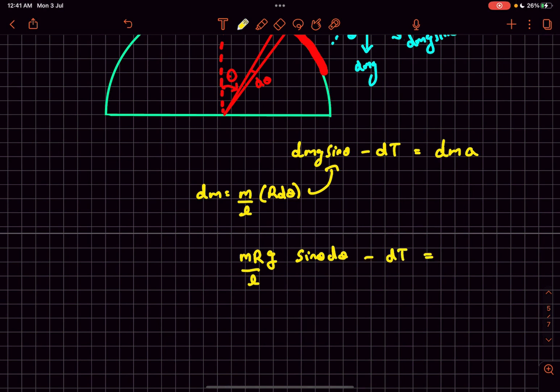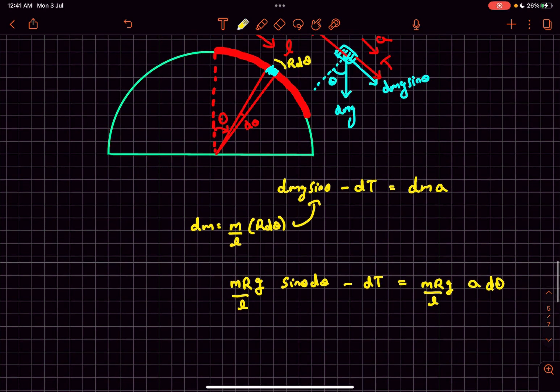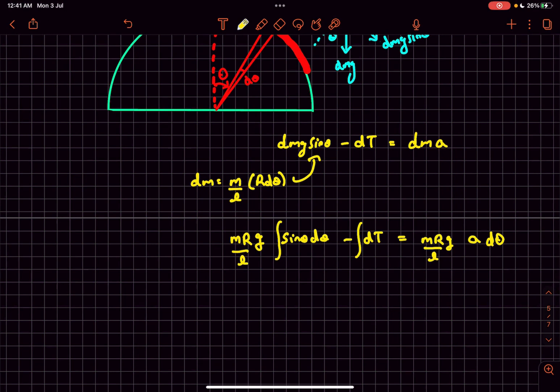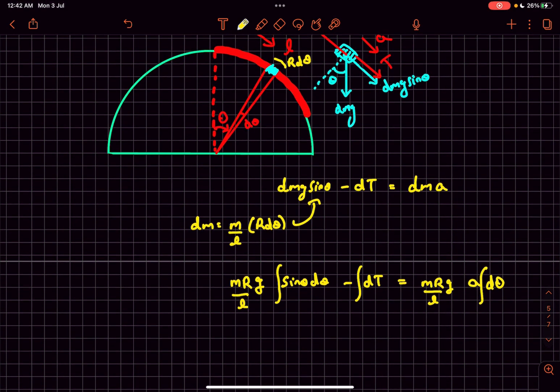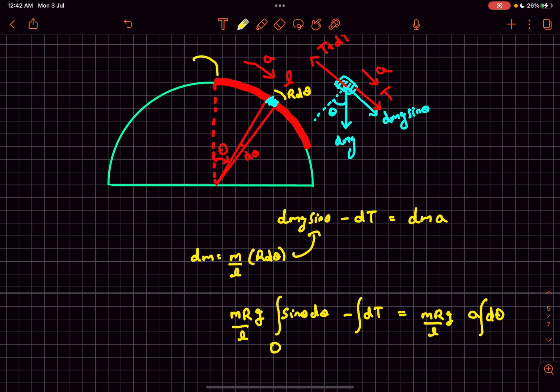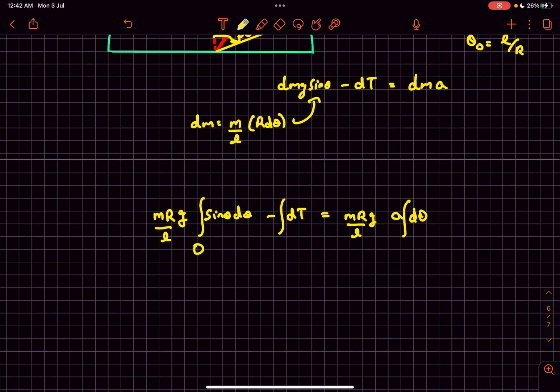Now I'm going to integrate this expression from theta equals zero degrees to theta equals theta_0, where the extreme angle theta_0 equals l/r. We integrate from zero to theta_0 because at the endpoints the tension would be zero.